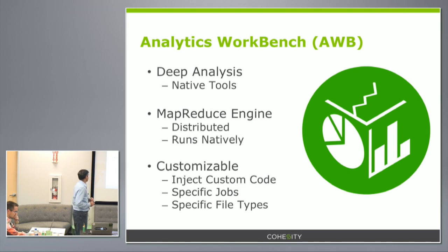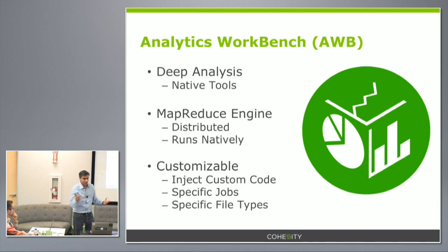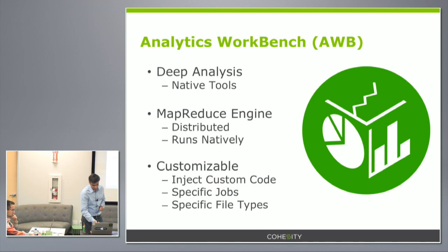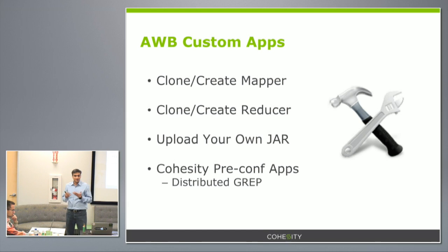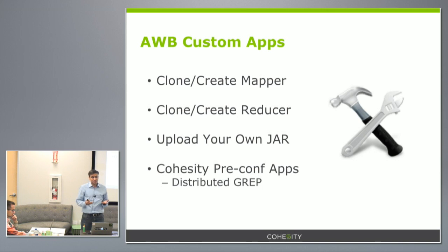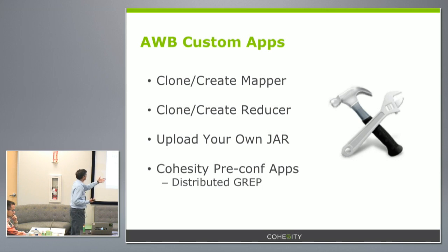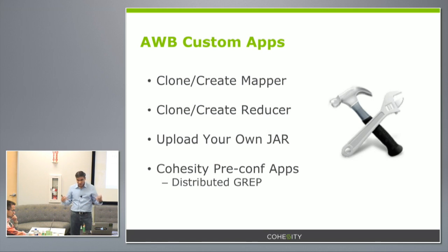You can support custom analysis and customize it from the source side — you can decide which VMs you want to run on, which backup jobs you want to run the analysis on, which specific file types, and so forth. The way it comes together in AWB is you create what we call apps. An app is a mapper and a reducer taken together — you create or pick one of the existing mappers and do the same with the reducer.